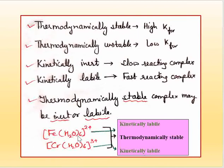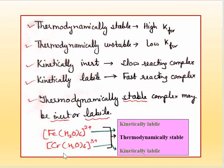Now let's see some examples. Consider the iron aqua complex and the chromium aqua complex. Both of these are thermodynamically stable — their formation constants are high. However, it is not necessary that thermodynamically stable complexes are kinetically inert. These complexes are actually kinetically labile because they easily undergo substitution reactions very fast. We cannot say that if a complex is thermodynamically stable, it must be kinetically inert.